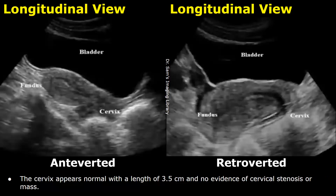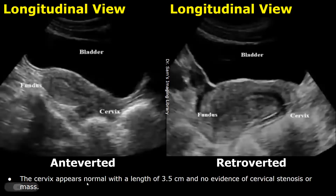After that, you can write about the appearance of the cervix and mention its length. In the end, you can write about any cervical stenosis or mass. In this normal example, there was no evidence of cervical stenosis or mass.